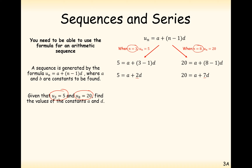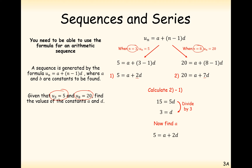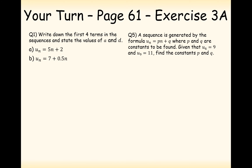Now we have two simultaneous equations. Calculating equation 2 minus equation 1 gives 15 equals 5d, so d equals 3. Substituting d equals 3 into one of the equations gives a equals minus 1. So the sequence starts at minus 1 and goes up by 3 each time.